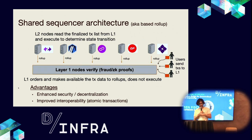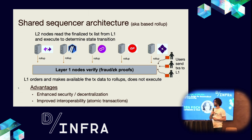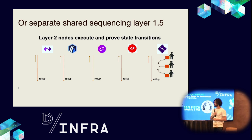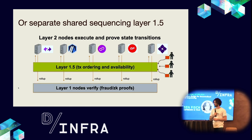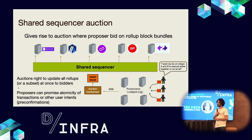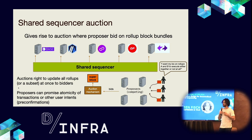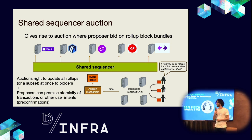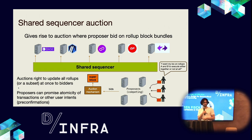I'm going to focus on the revenue allocation problem, because it's a fundamental incentive alignment problem between applications and the layer one, and rollups and the layer one. There could also be a separate layer 1.5 handling this job. We can think of a shared sequencer as a marketplace running some kind of joint auction, where proposers bid on rollups — not only individual rollups, but also bundles of rollups — auctioning the right to update all rollups, or a subset, at once.